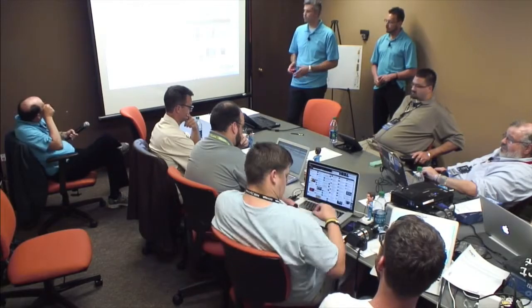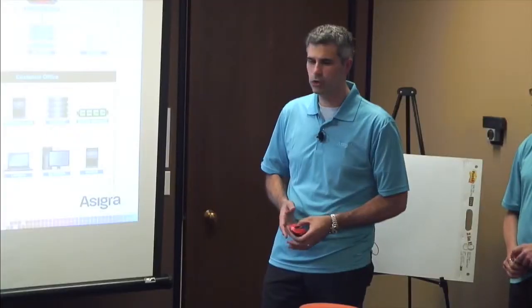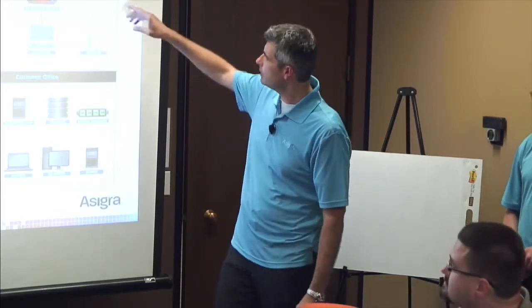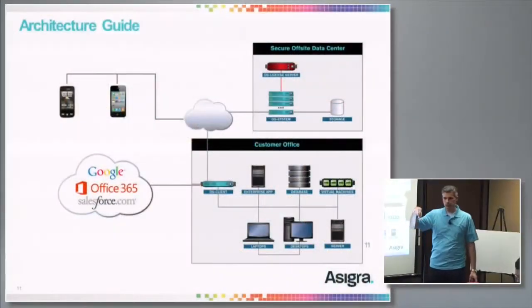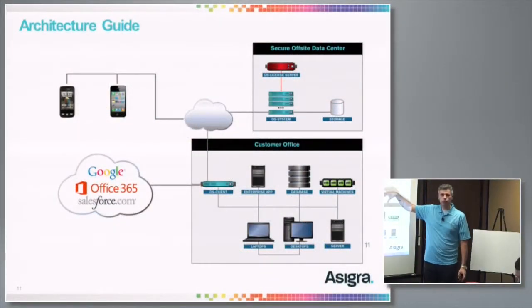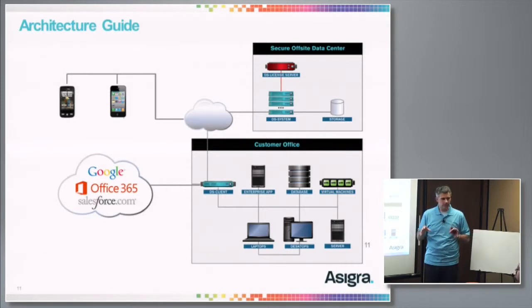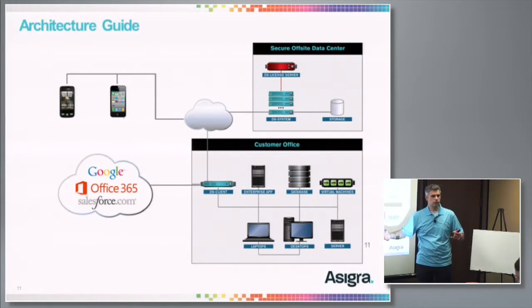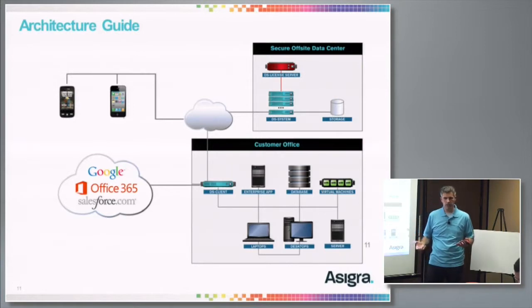Let's get on to the ASEGR architecture. There are three basic components to the ASEGR architecture. To start out with, the license server. The license server is the central point of control for all licensing activity. It doesn't get involved in the backup — no backup data goes through it — but it controls how much of the resource, the space, is actually being used up.